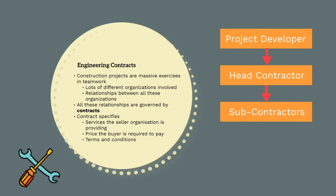Therefore, head contractors — also known as general contractors — always need to engage external parties to perform works for them. In the same way, the project developer will engage a head contractor to complete the project for them. All these relationships are governed by contracts. There are contracts in place between the project developer and head contractor, and between the head contractor and all their subcontractors and suppliers. These contracts specify the services the seller organisation is providing, the price the buyer organisation is required to pay, and the terms and conditions of this relationship.